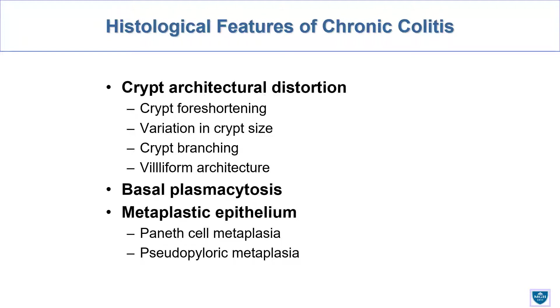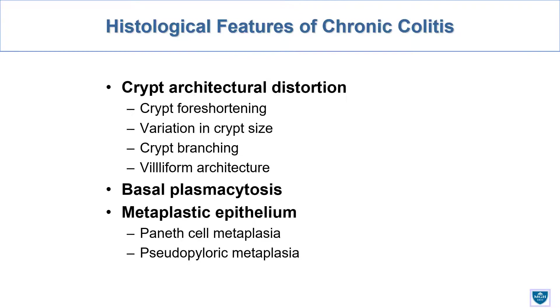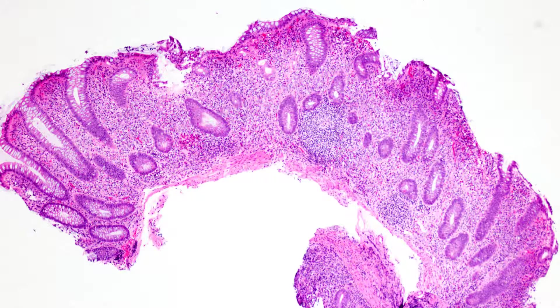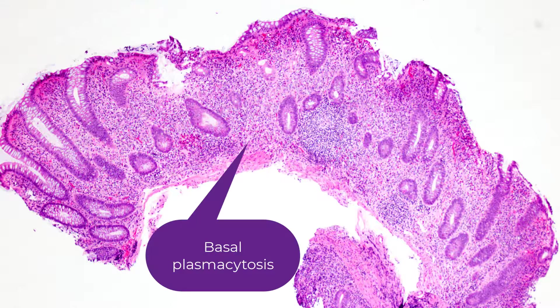Which of these three is perhaps the best feature? It's basal plasmacytosis. That's the feature on which I hang my hat on. This is classic chronic colitis. Let's start naming the features: basal plasmacytosis.